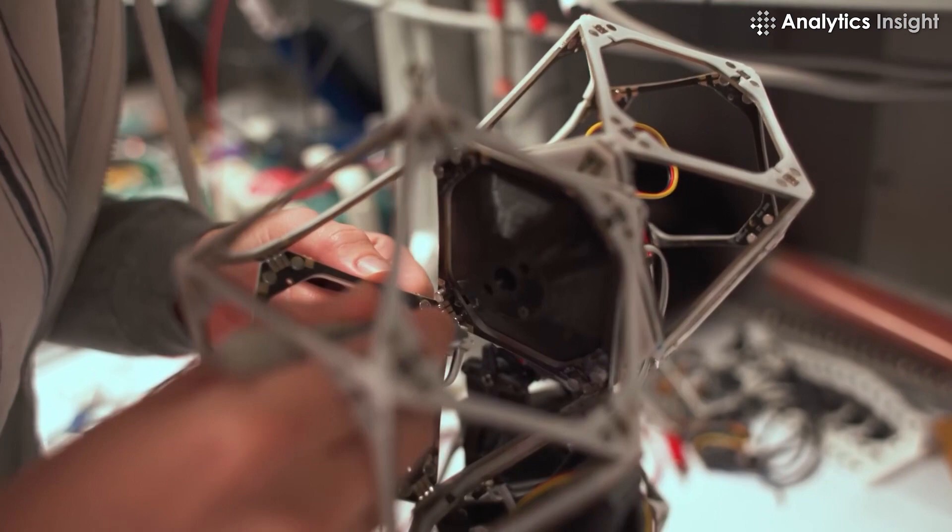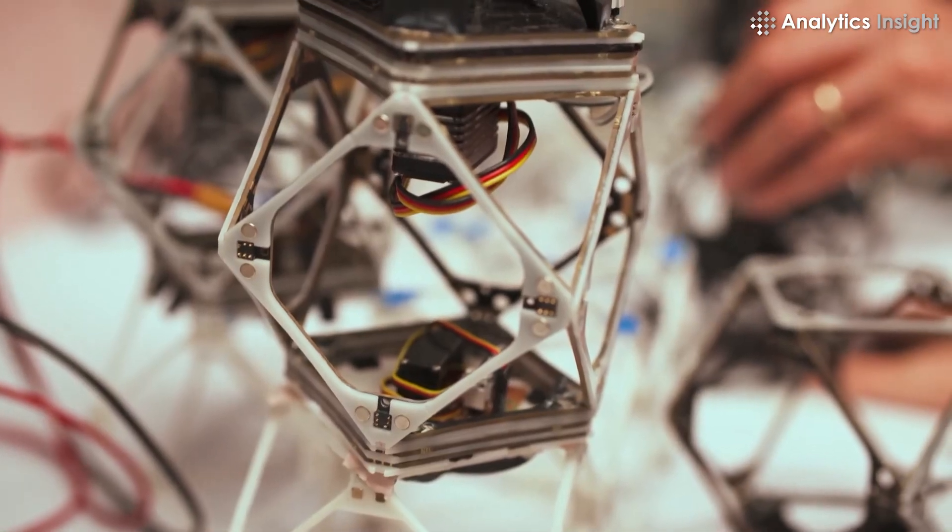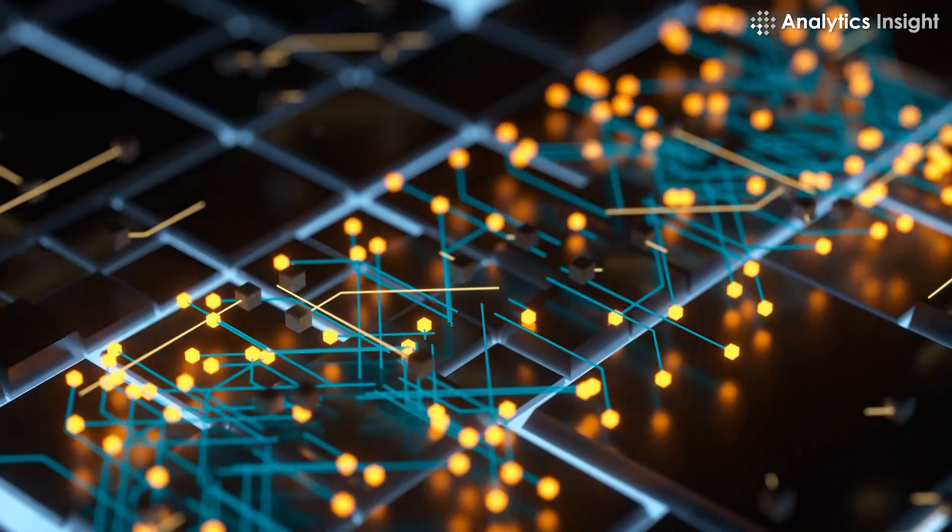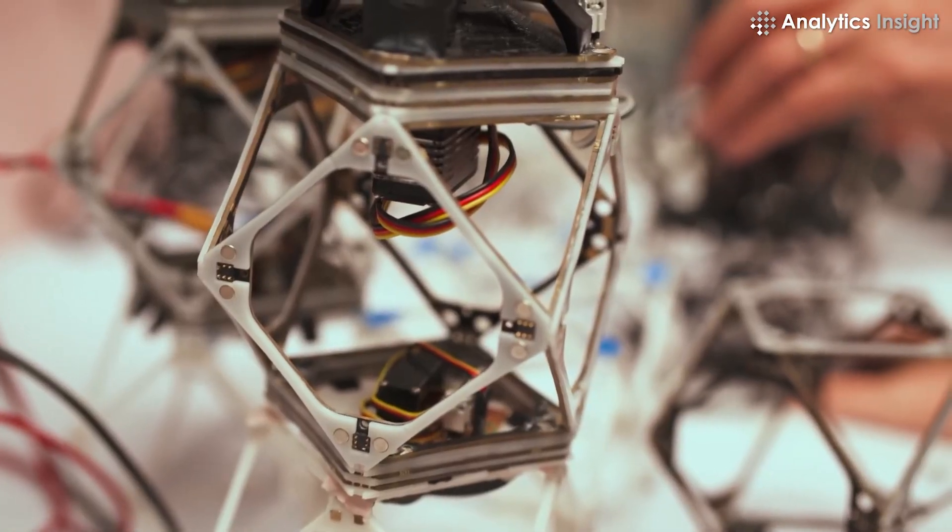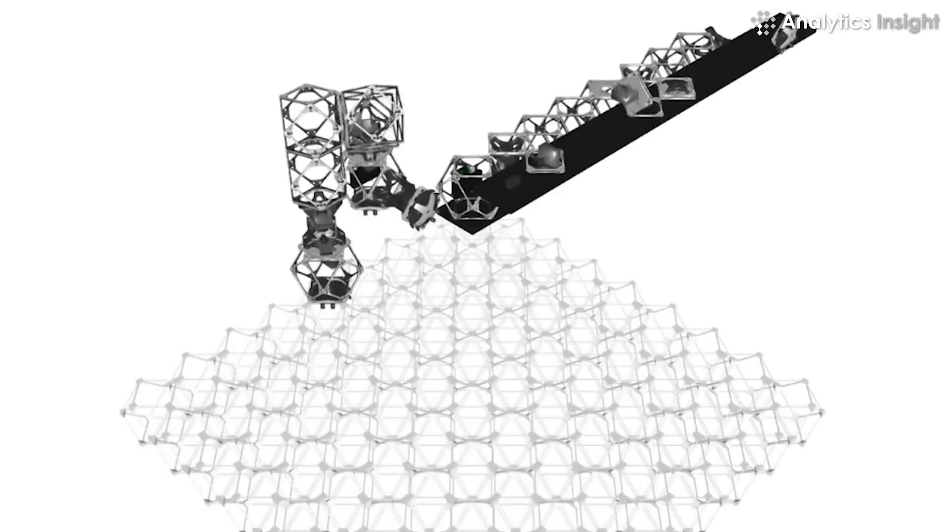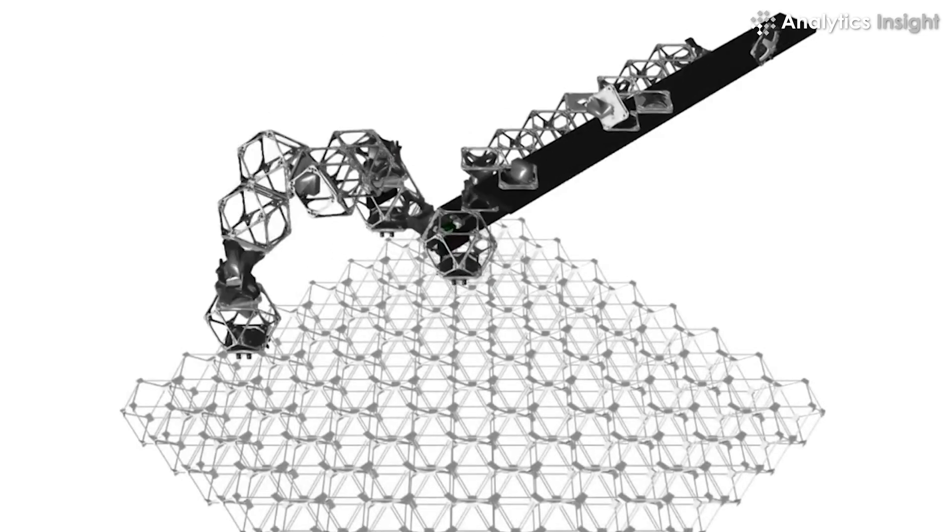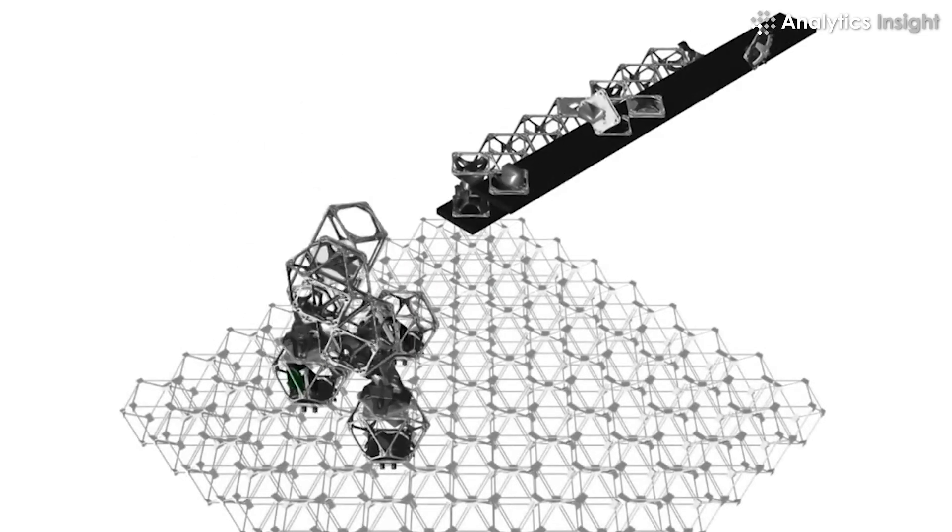At the system's center are voxels, a term borrowed from computer graphics, which carry power and data that can be shared between pieces. The pieces form the foundation of the robot, grabbing and attaching additional voxels before moving across the grid for further assembly.